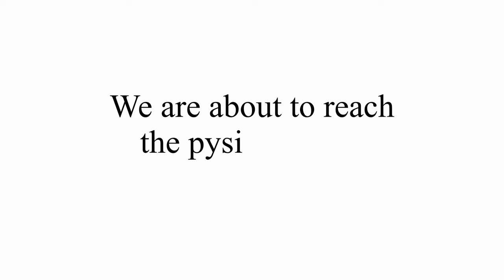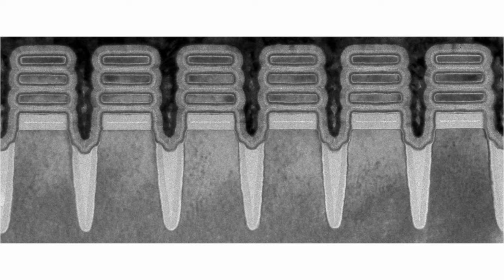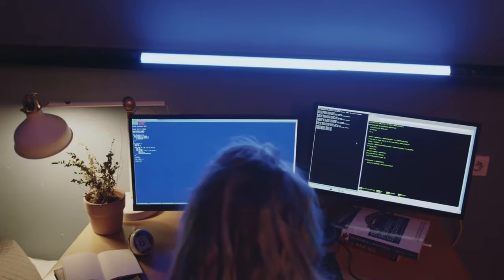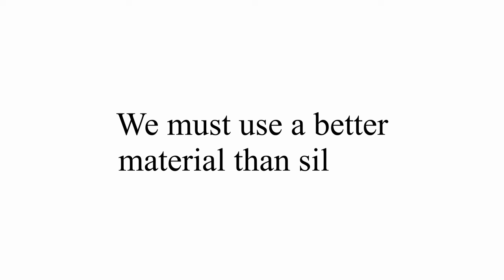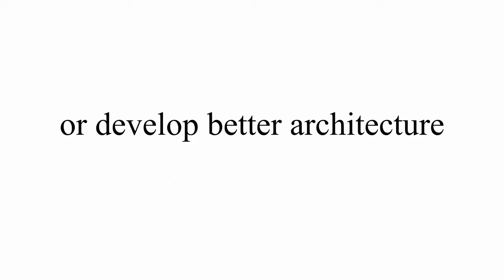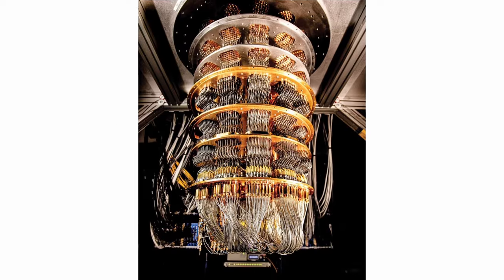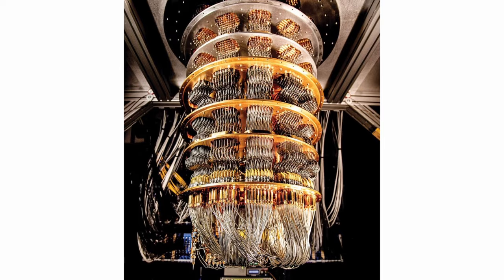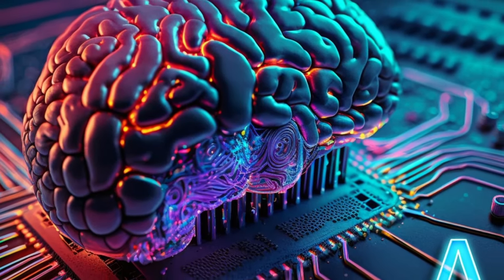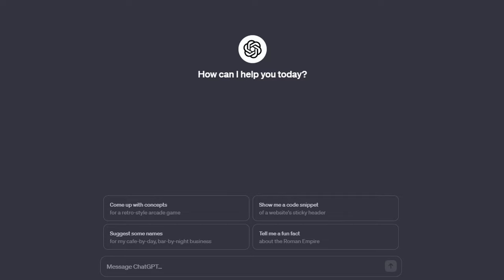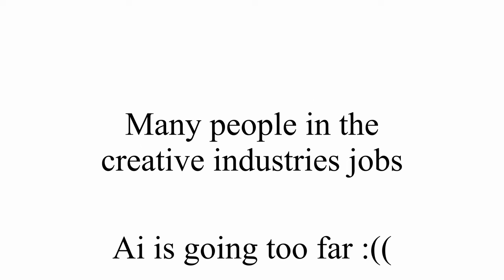We are about to reach the physical limits of silicon, having reached 2nm processes, which is about 5 atoms apart. This means that in order to further develop more efficient computers, we must use a better material than silicon or develop better architecture for the material. This is the reason why quantum computers are starting to be researched and developed. Artificial intelligence is also at its peak, being able to create arguably realistic recreations of human speech, art, music, and many others, which is threatening to take many people in the creative industry's jobs.